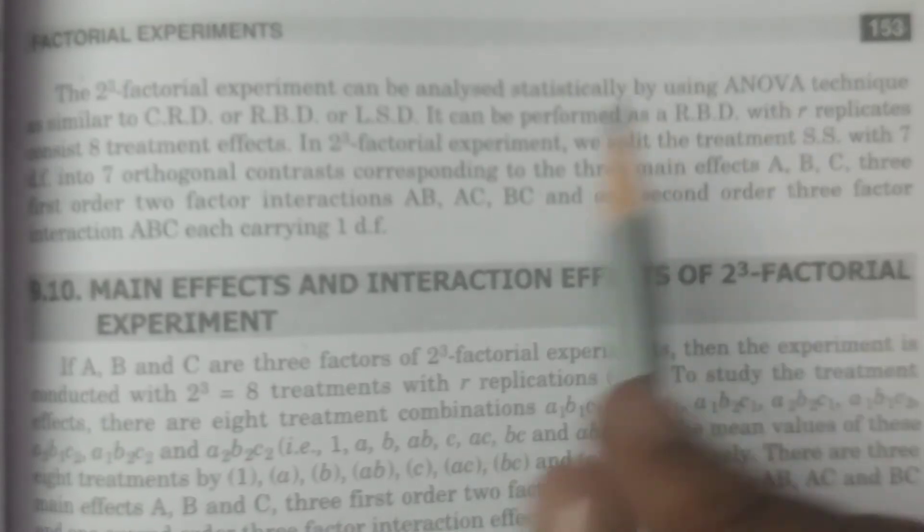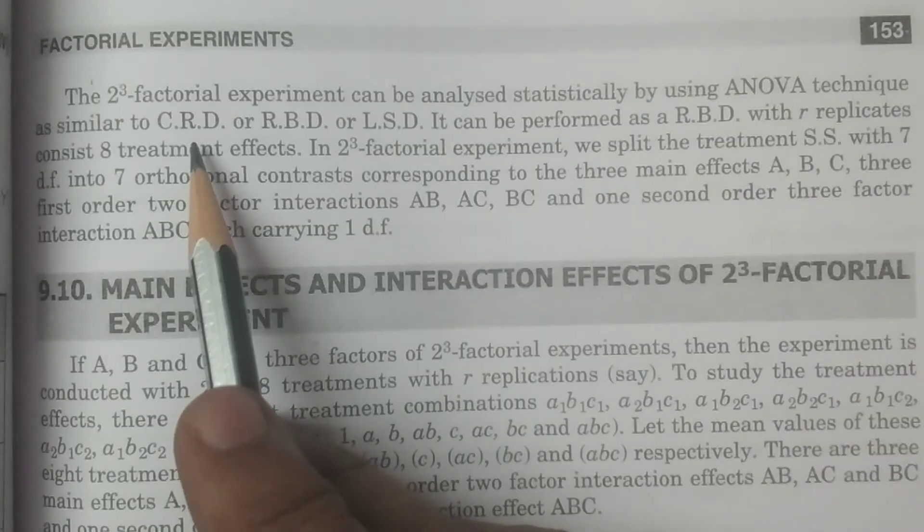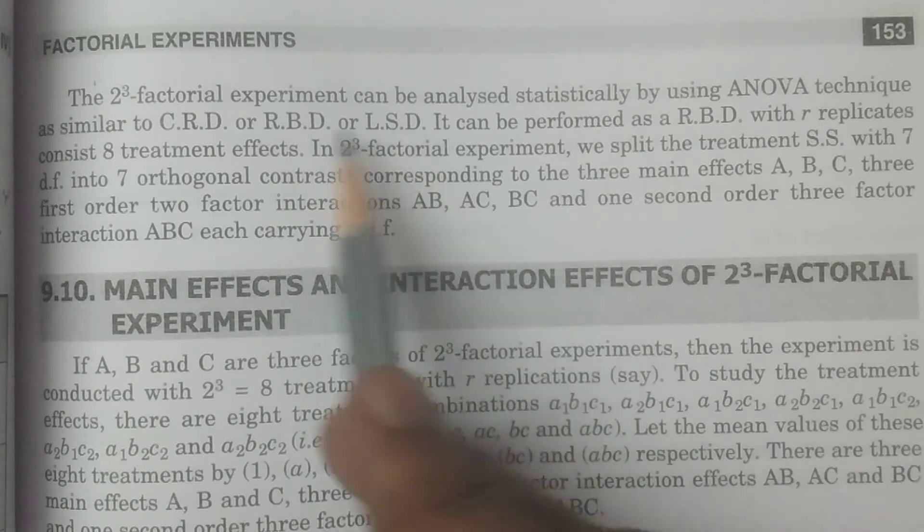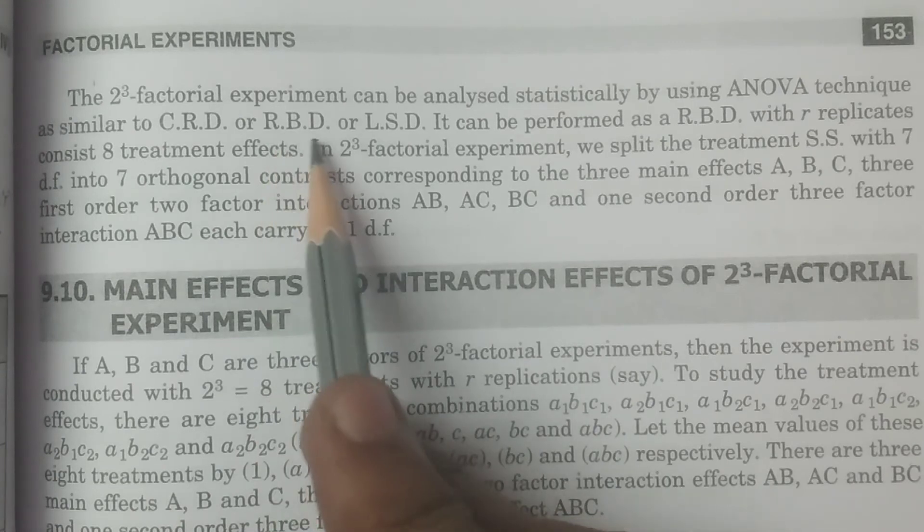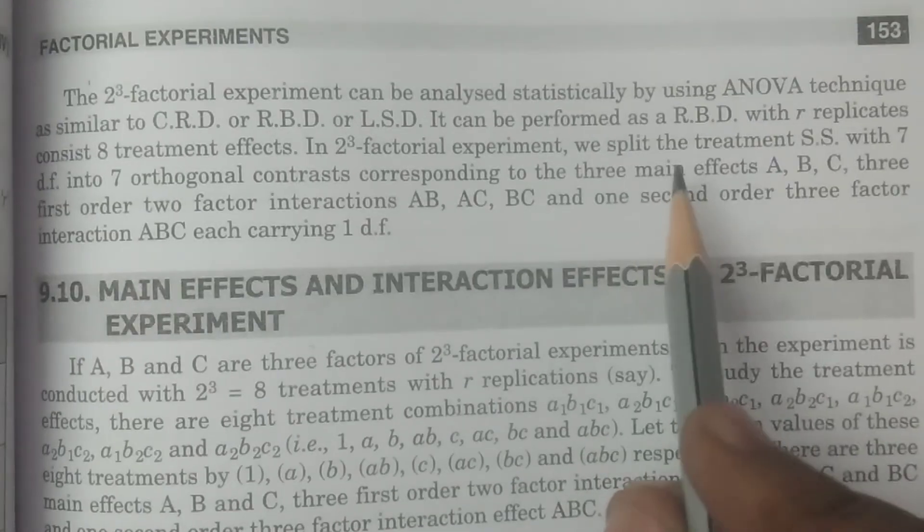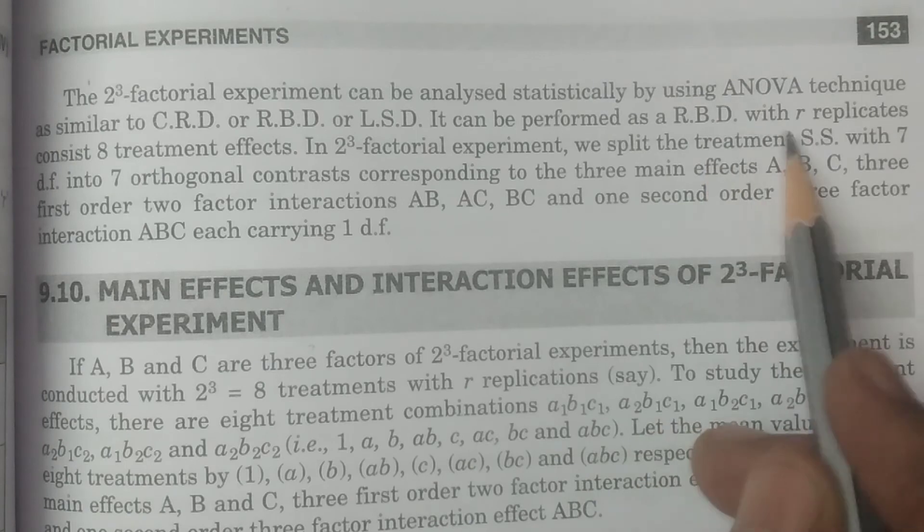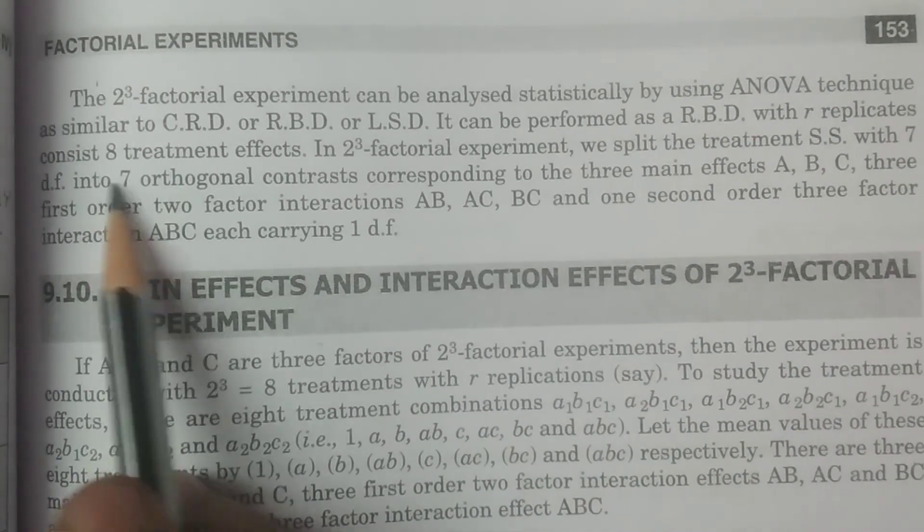The two cube factorial experiment is analyzed statistically by using analysis of variance technique, ANOVA, which is very similar to either CRD or RBD or LSD. Usually we mostly use RBD, randomized block design to perform. It can be performed as you see here, RBD with r replicates consists of eight treatments.